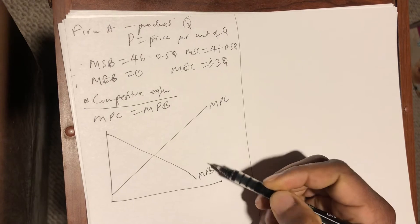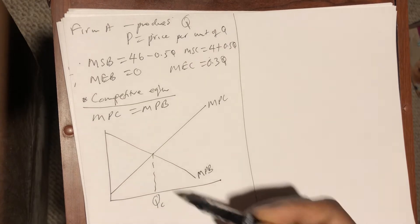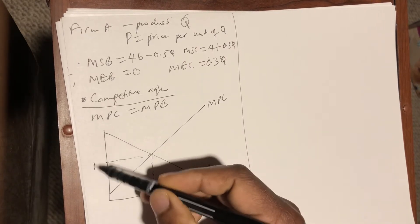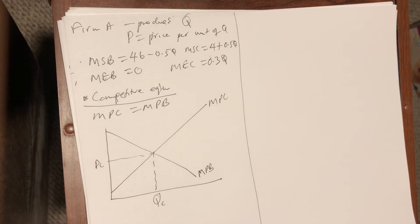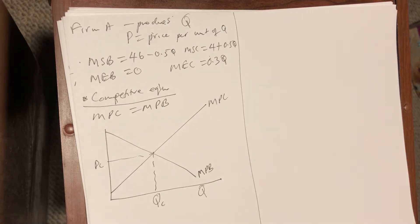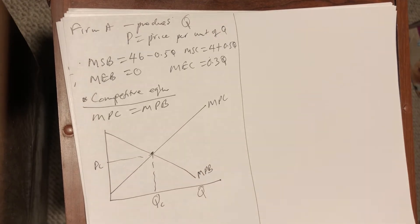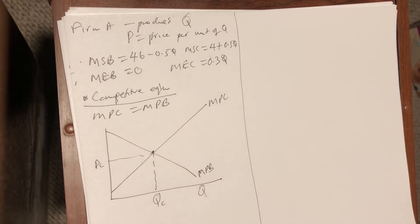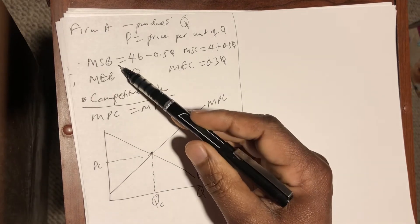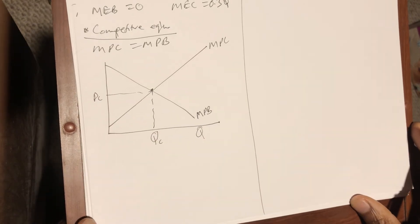On the graph, Qc is the competitive equilibrium quantity and Pc is the competitive equilibrium price — for example, for a good like gasoline. To find the competitive equilibrium, we equate MPB and MPC. Since we are given MSB and MSC, we first need to derive MPB and MPC.